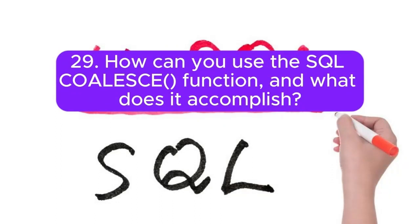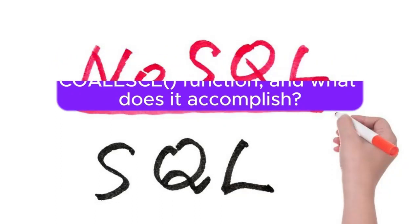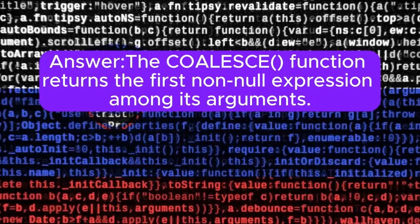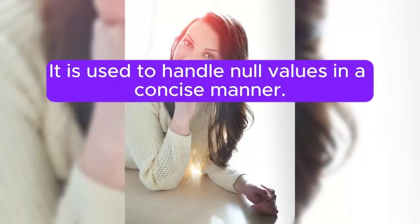Question 29: How can you use the SQL coalesce function, and what does it accomplish? Answer: The coalesce function returns the first non-null expression among its arguments. It is used to handle null values in a concise manner.